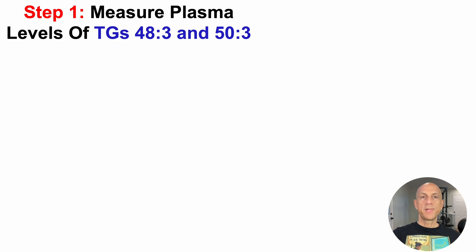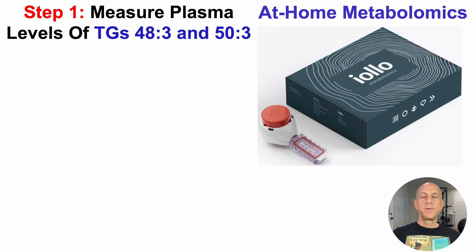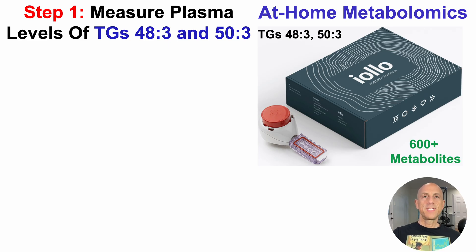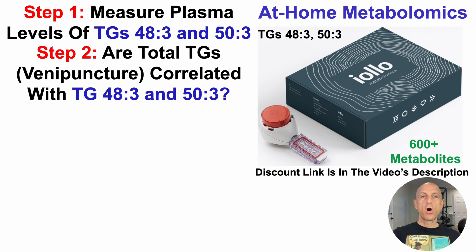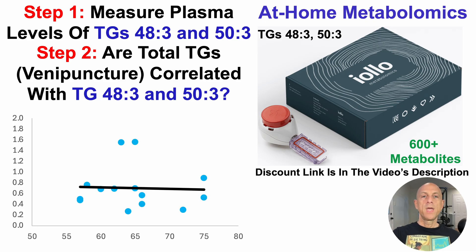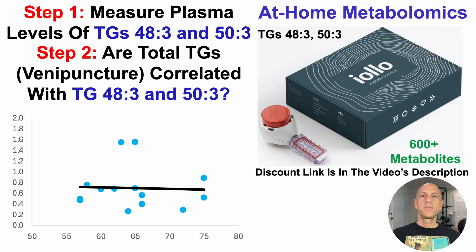Step one is to measure plasma levels of TG48-3 and TG53, using at-home metabolomics which includes data for these and more than 600 other metabolites. Step two is whether total triglycerides obtained by venipuncture are correlated with TG48-3 and TG53. Venipuncture is obtained by going to the lab; for the plasma levels of TG48-3 and TG53, I use a TASSO device. The two tests are within about 45 minutes of each other, under the same fasted conditions.